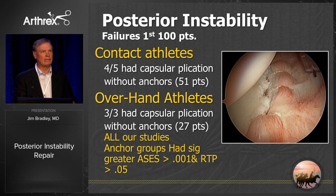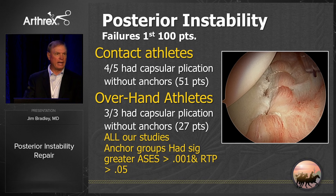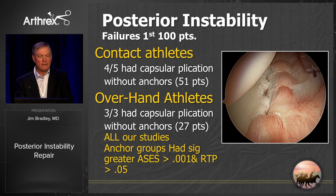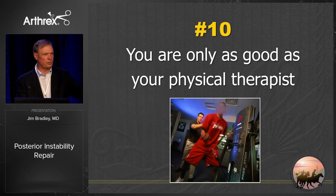The ninth thing is: when in doubt, use suture anchors. In all of our studies — overhand athletes, football players, contact athletes — the anchor group had significantly better ASES scores and significantly better return to sport in every paper. The tenth thing: you're only as good as your physical therapist, because they see patients as a movie picture while you see snapshots. Get therapists who are good at caring for these patients.